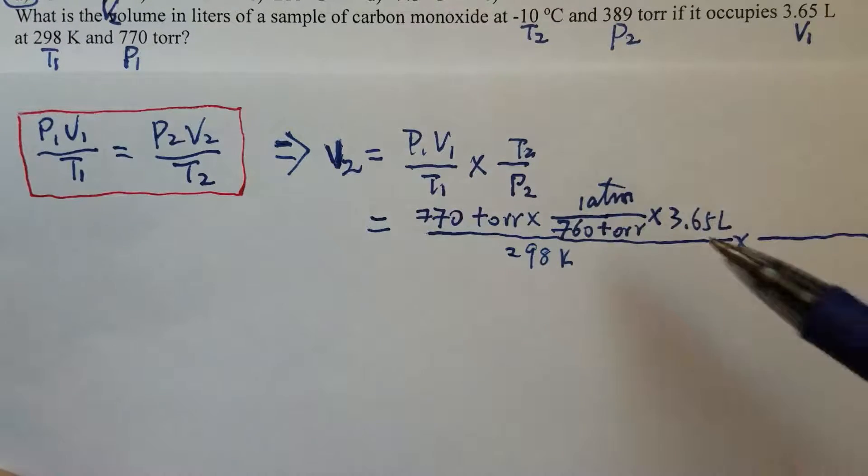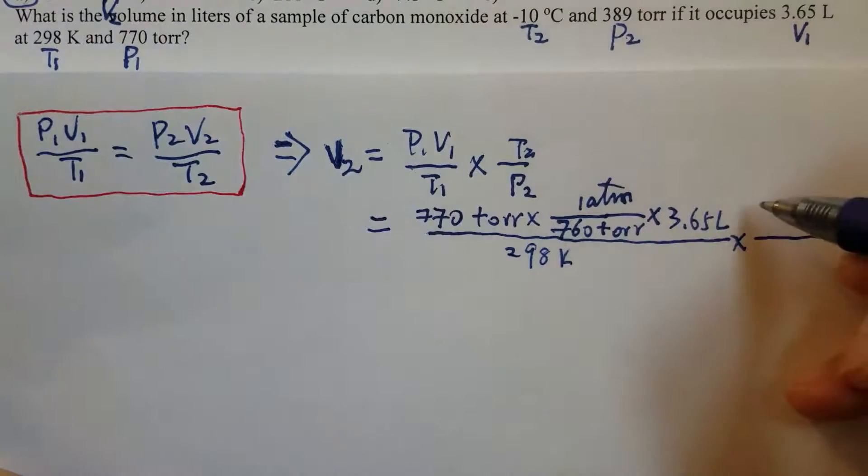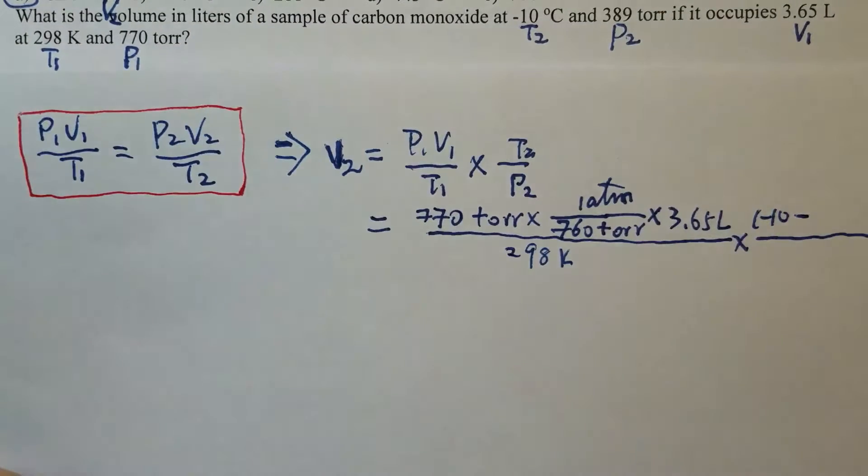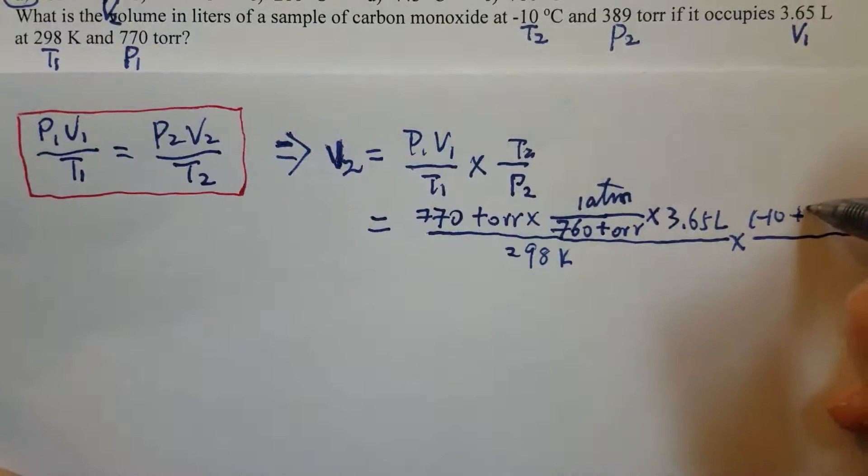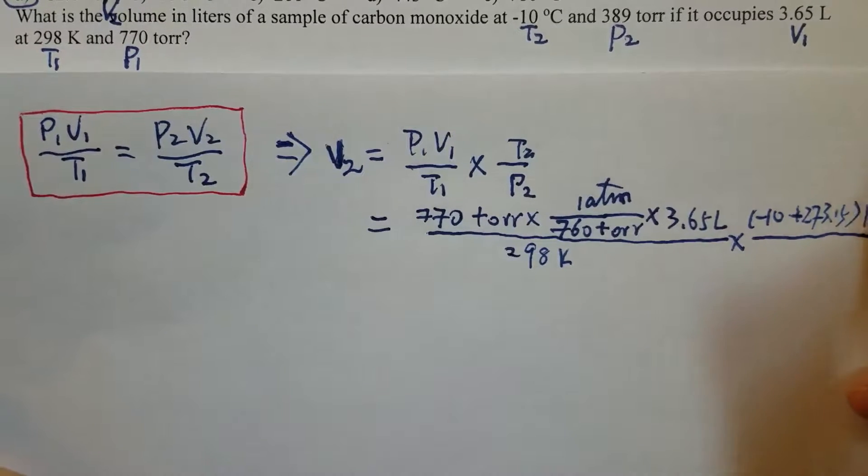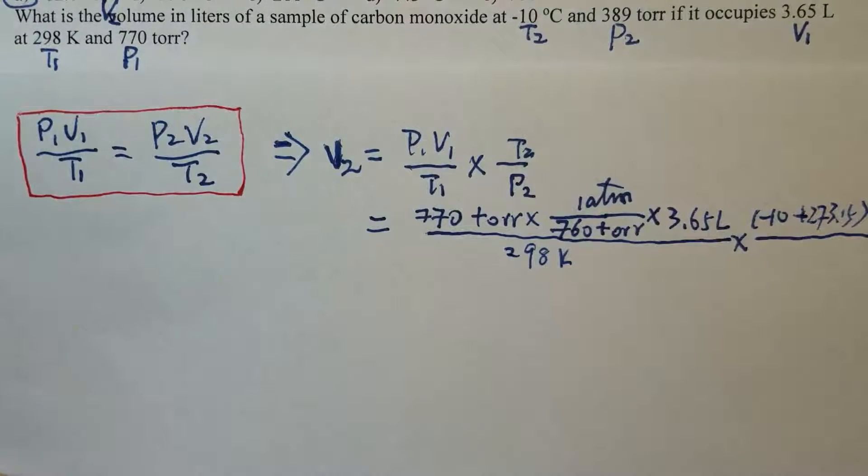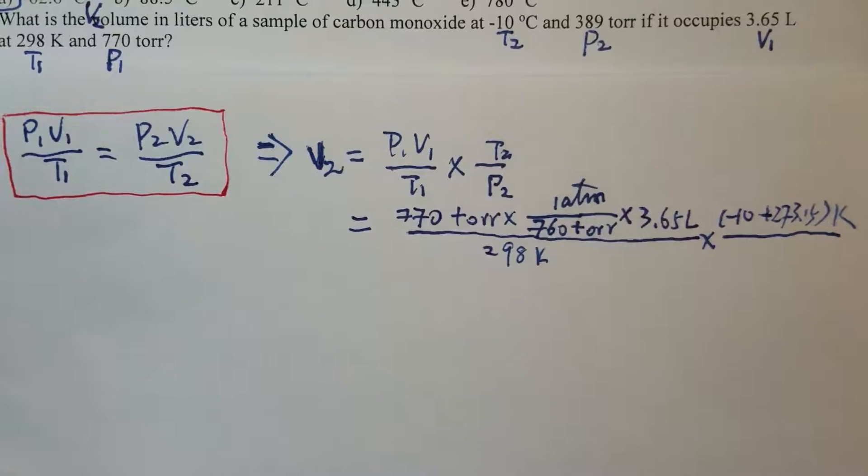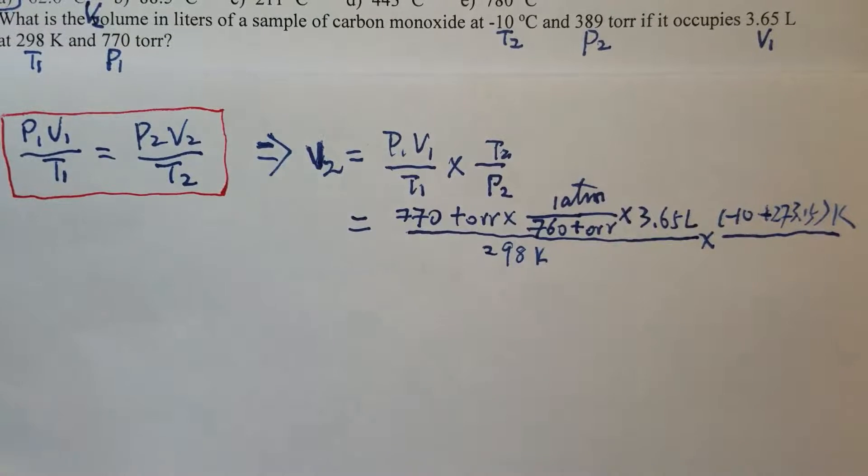Okay, so T2, that's minus 10 degrees Celsius, and we need to convert that to Kelvin. All right, okay, so, Kelvin, okay, yeah. And now, P2.